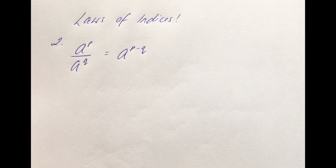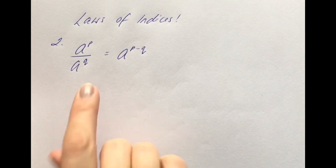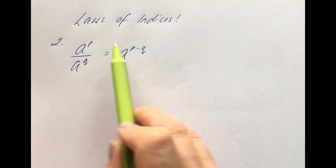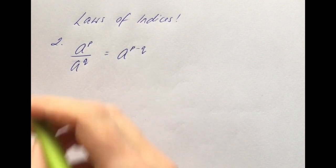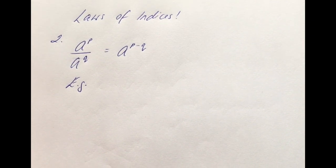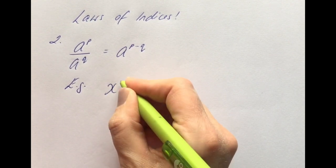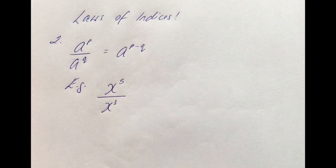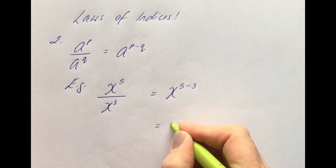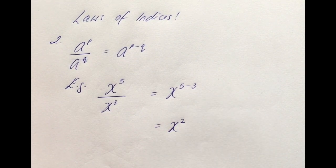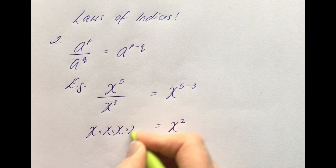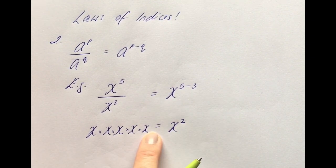The second law, as it appears on page 21 of your log tables, is: a to the power of p divided by a to the power of q equals a to the power of p minus q. Let's look at an example. If you have x to the power of 5 divided by x to the power of 3, this law says it's the same as x to the power of 5 take away 3, which is x to the power of 2.